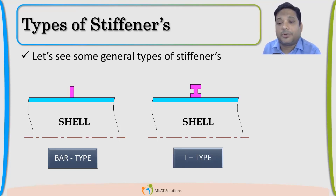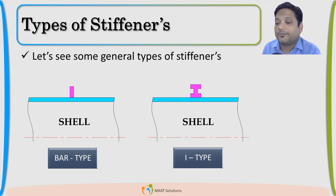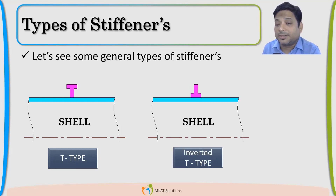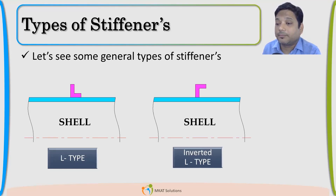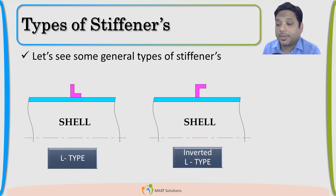Before checking strength criteria, let us understand the types of stiffeners. We have ring-type stiffeners, I-type or T-type stiffeners — including T and inverted T — and angle-type stiffeners.